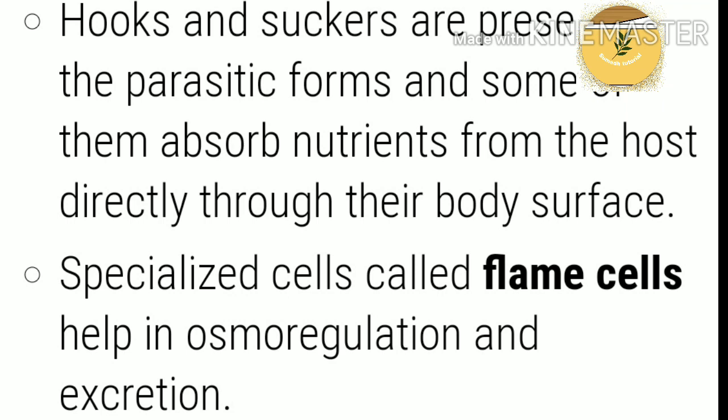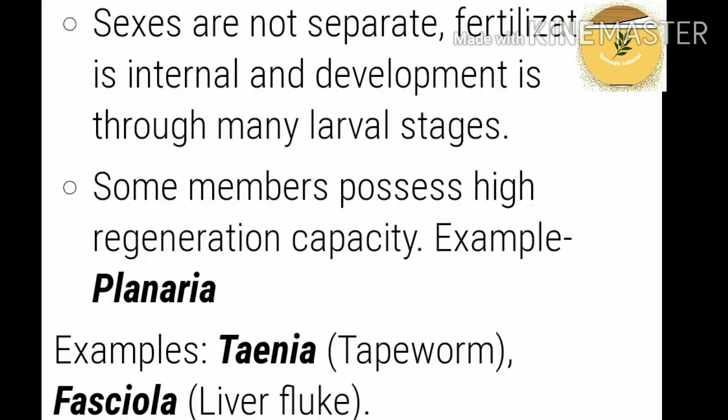Specialized cells called flame cells help in osmoregulation and excretion. Sexes are not separate — this condition is called hermaphrodite. Fertilization is internal and development occurs through many larval stages, making development indirect.